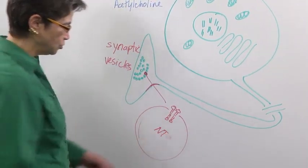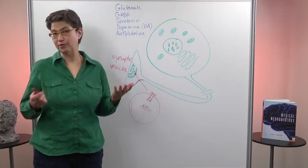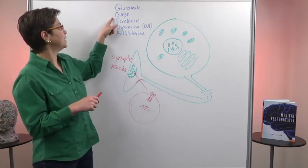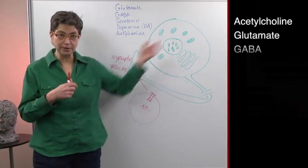The neurotransmitter can be any number of different molecules. Here are just a few of them: glutamate, GABA, serotonin, dopamine, acetylcholine. There's a more complete list that you can see.